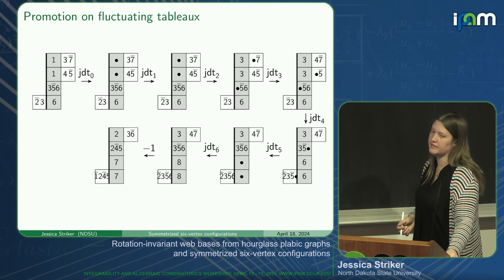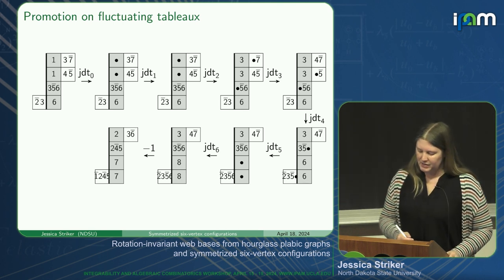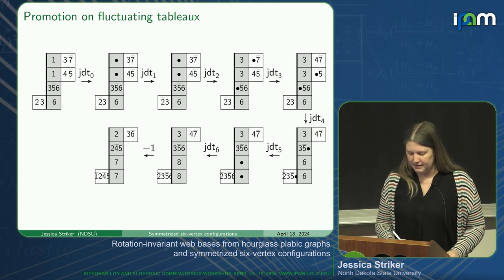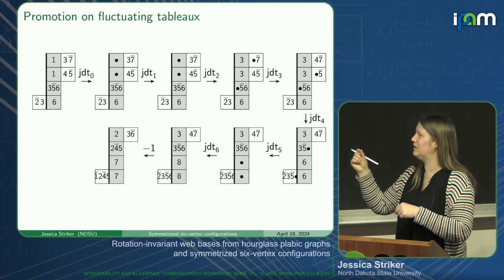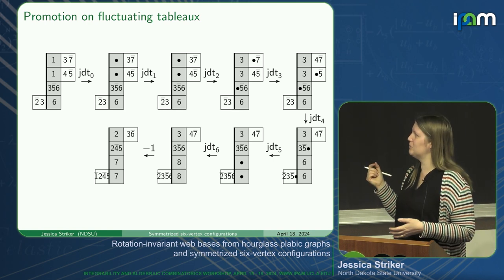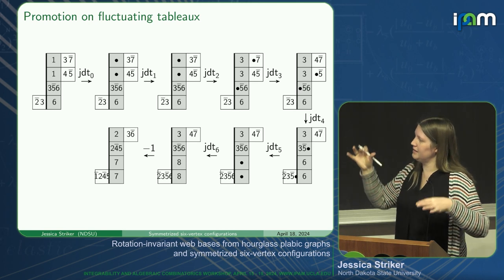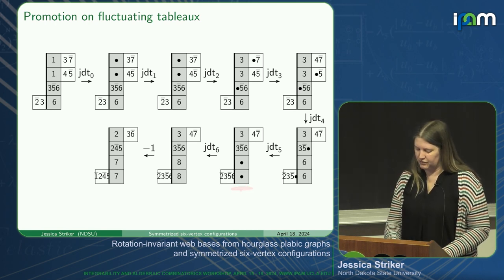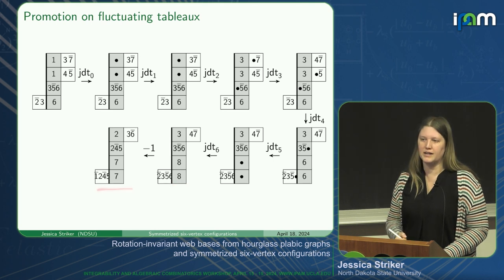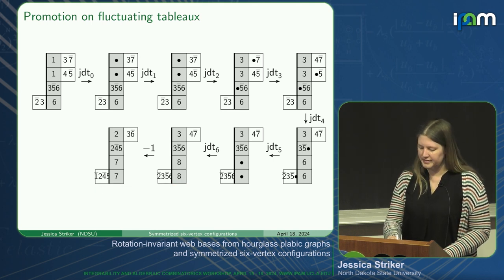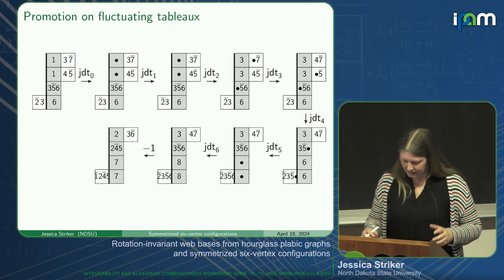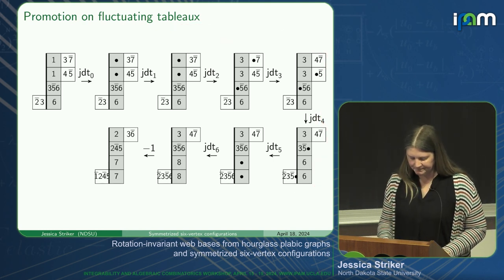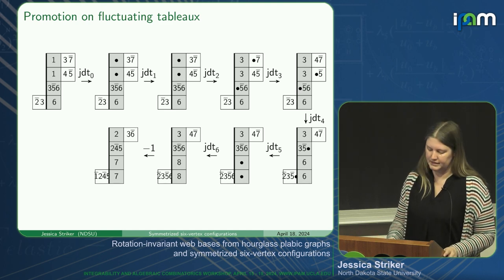Here's a picture of what we just did—you can see the blank box moving around. Tracking what numbers move between rows as we do promotion will be important for our bijection with tableau and these plabic graphs. Here's the picture of how this works on fluctuating tableau: instead of a blank box, we represent replacements as bullets, which can move into boxes that have some numbers in them, eventually making their way to an outer corner to get replaced by the next biggest number. This is promotion on a fluctuating tableau.